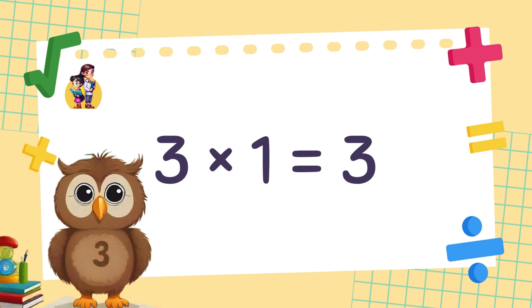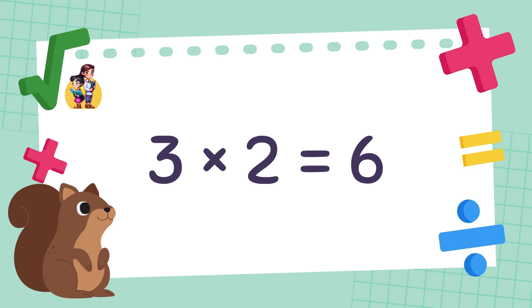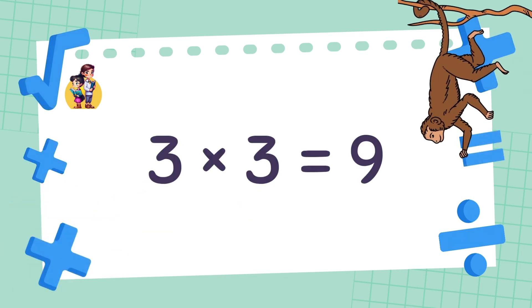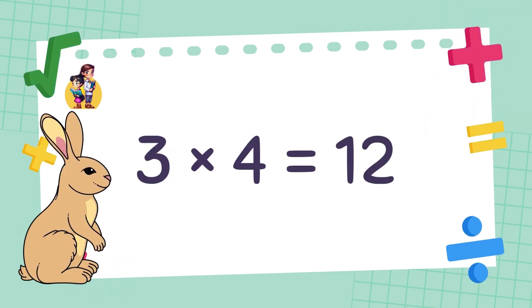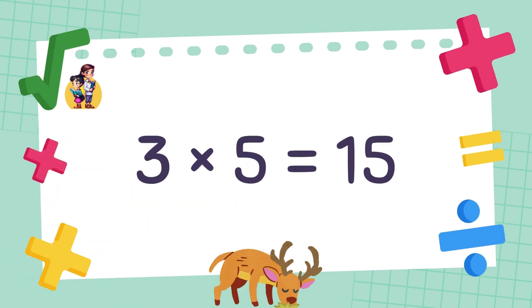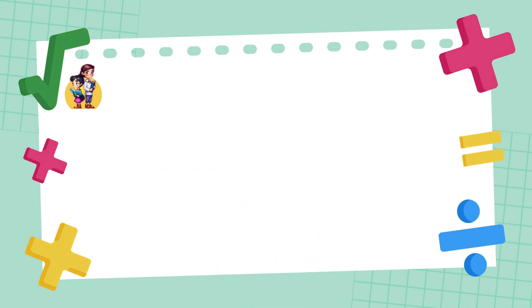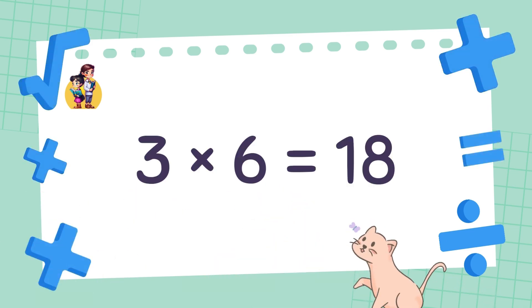3 times 1 is equal to 3. 3 times 2 is equal to 6. 3 times 3 is equal to 9. 3 times 4 is equal to 12. 3 times 5 is equal to 15. 3 times 6 is equal to 18.